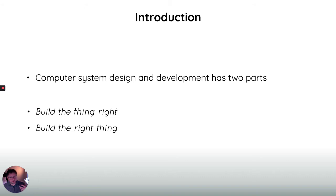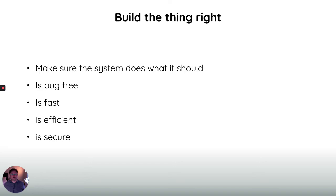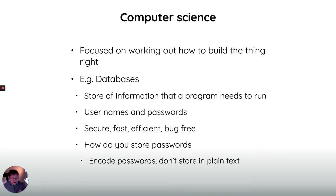The way we tend to think about it is that there are two halves to computer system design and development. Firstly, building the thing right, and secondly, building the right thing. By building the thing right I mean making sure that the software works — that the system does what it should, it's bug-free, it's fast, it's effective, it's secure.